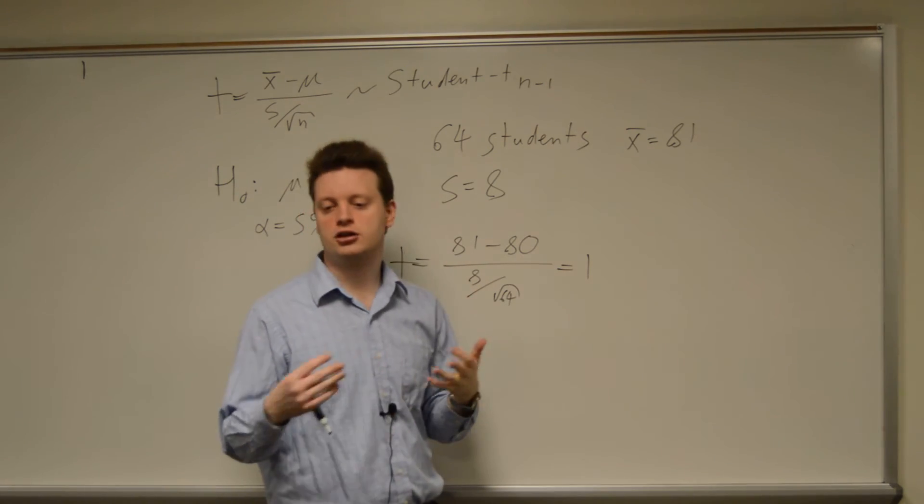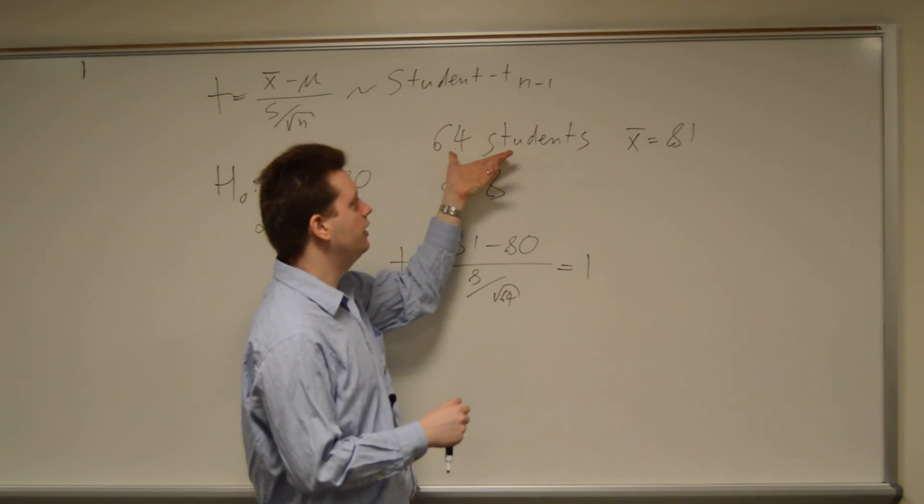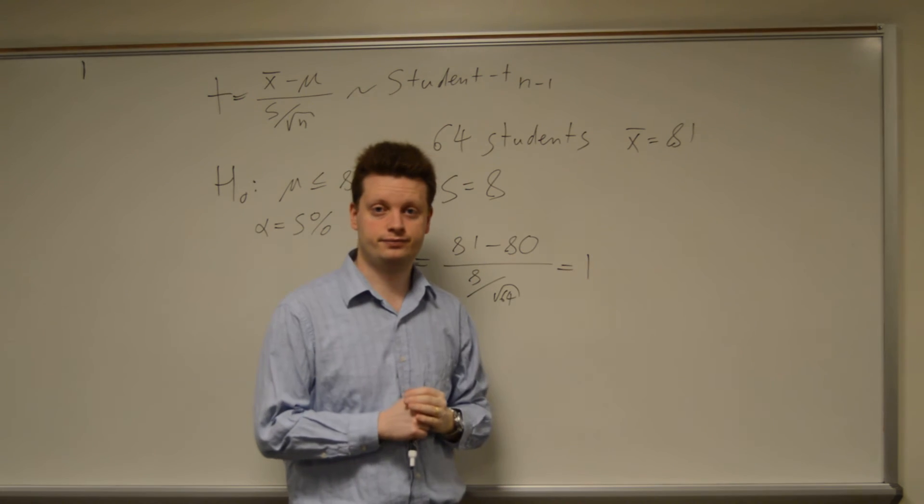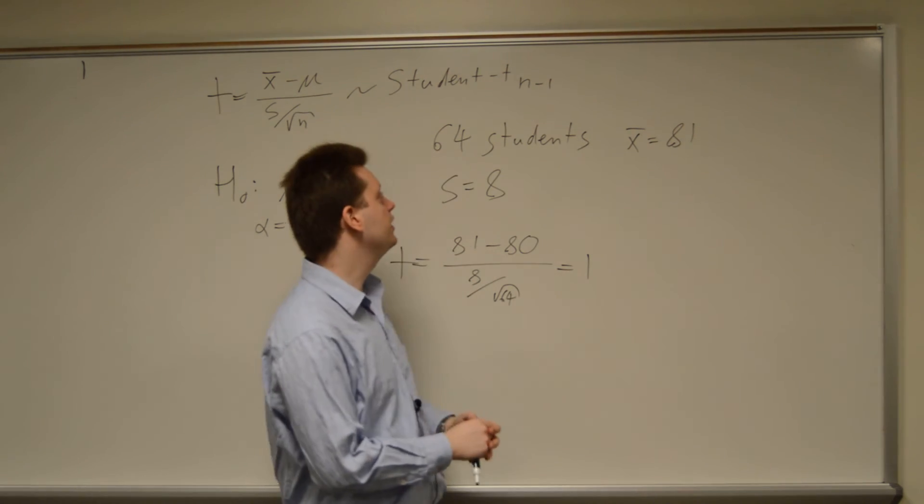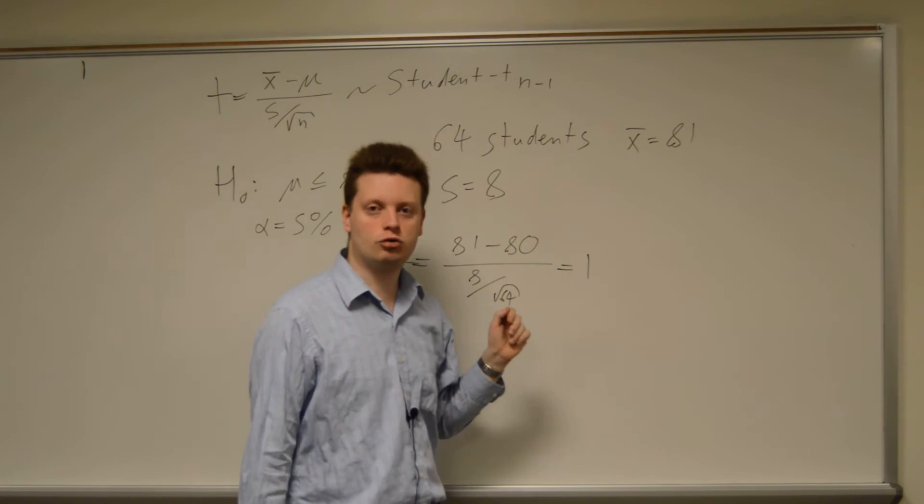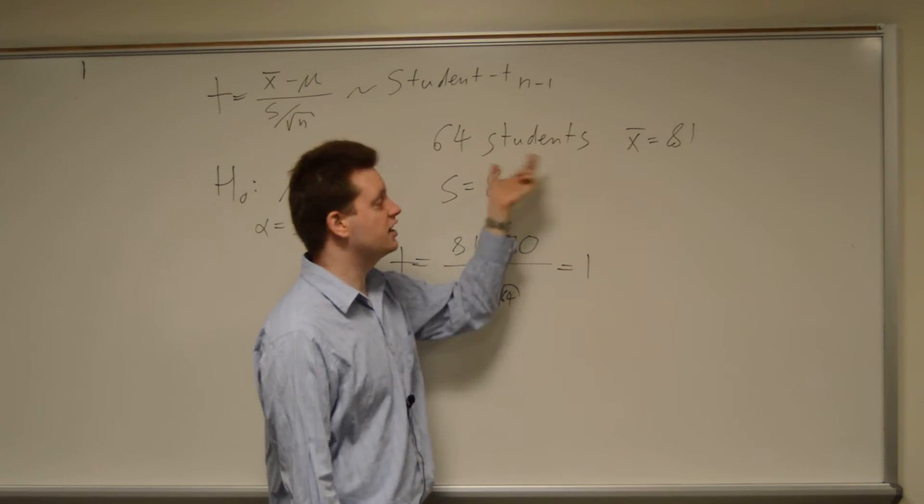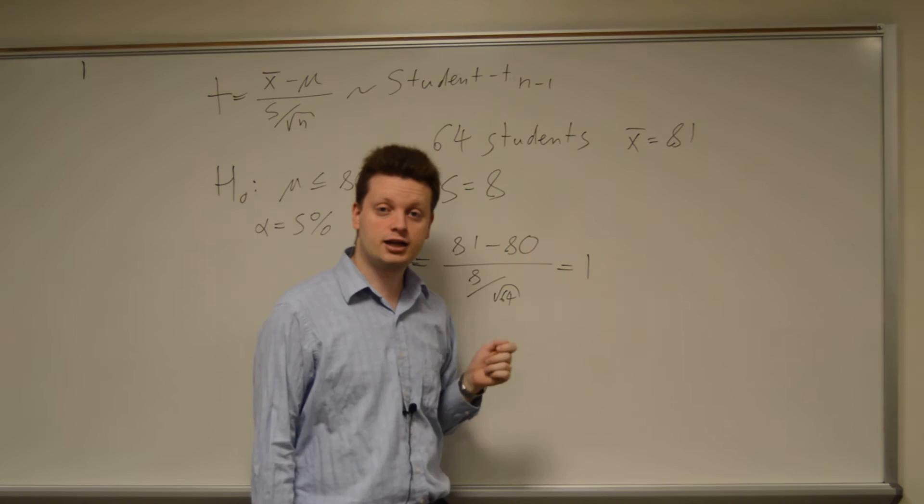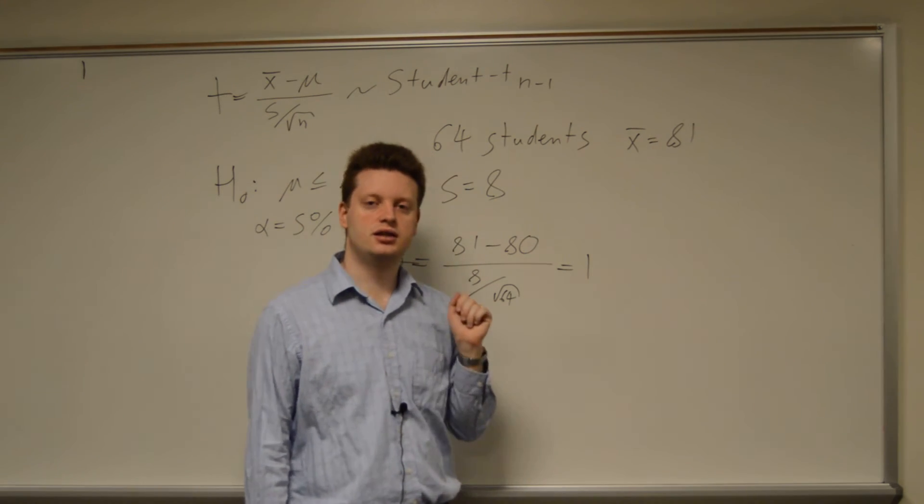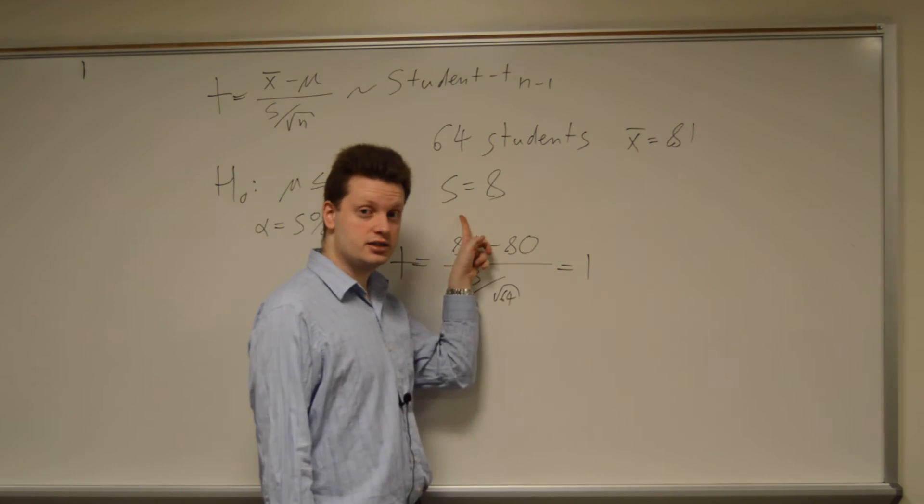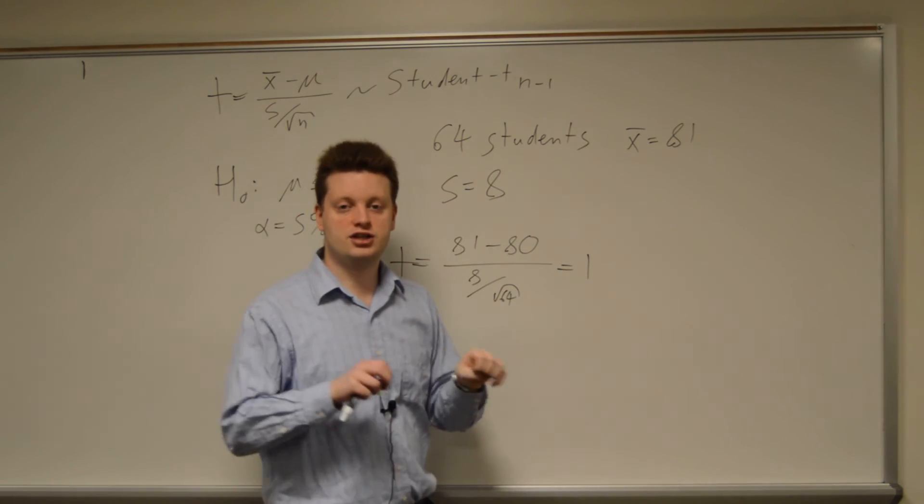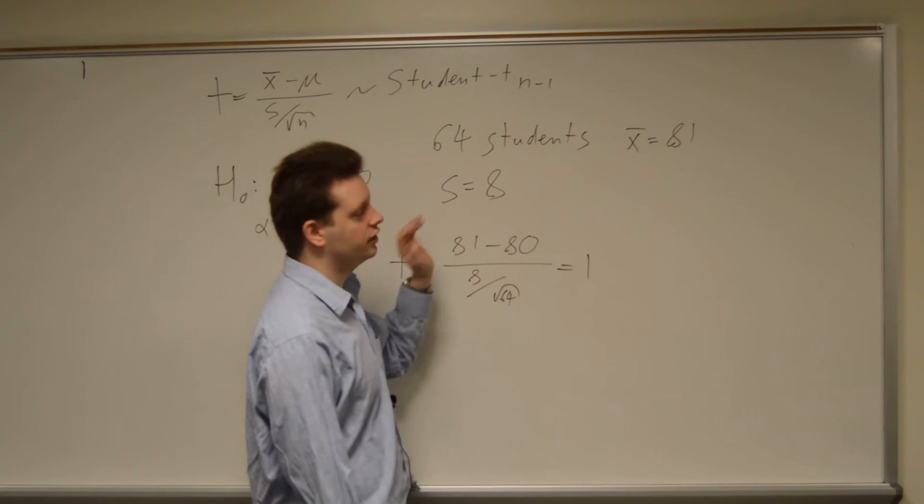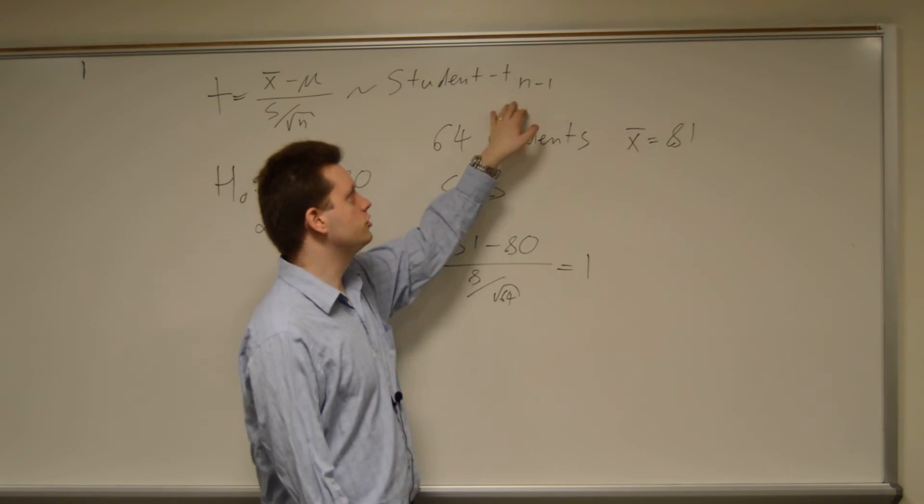We can use the standard normal distribution instead of the student t-distribution. The first case where we can use the standard normal table instead of the student t is if n is large. What does n large mean? Well, let's say larger than 30. If we have more than 30 observations, then we can just use a standard normal table. This is satisfied here.